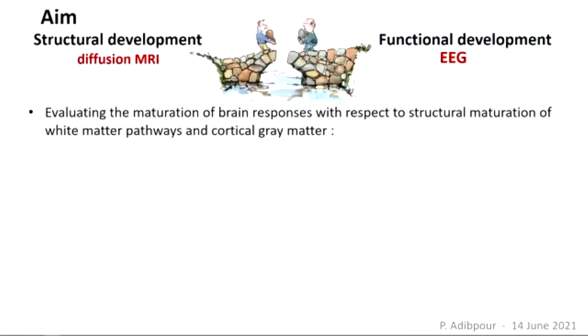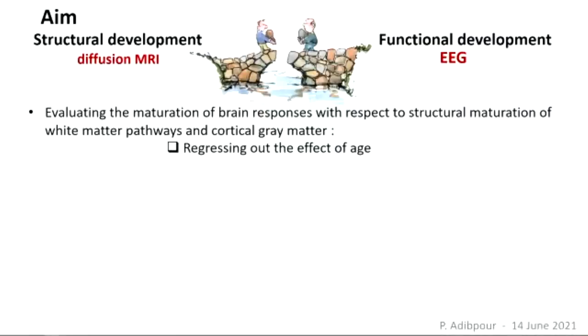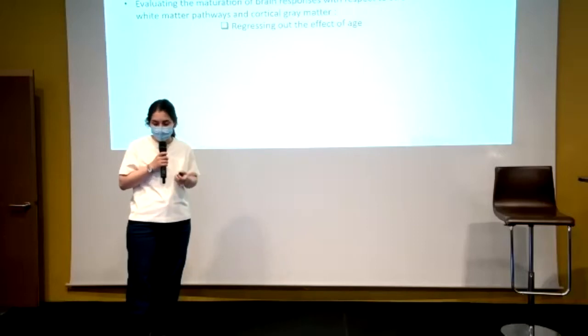The goal of this presentation is to make a link between measures of structural brain development and measures of functional brain development, quantified using diffusion MRI and EEG. The work aims to evaluate the maturation of brain responses with respect to white matter pathway and cortical gray matter maturation. One factor to consider is that both structural and functional parameters all change with age, so we need to regress out the general effect of age.